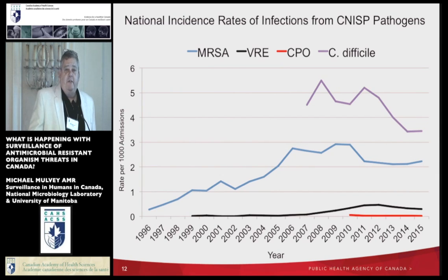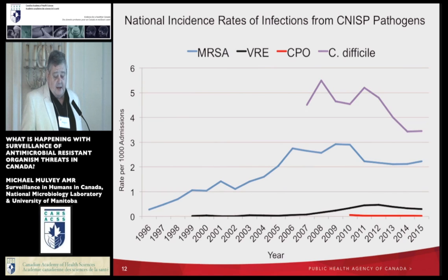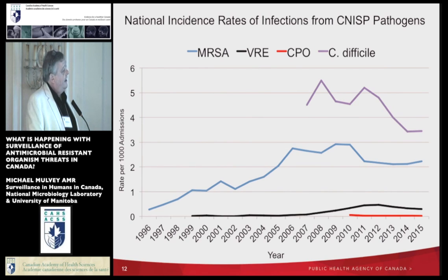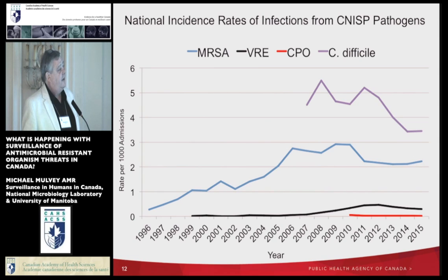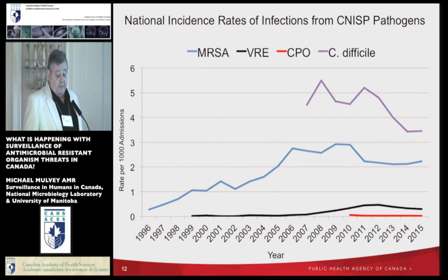This is a summary of the surveillance that's gone on at the CNISP program over time. MRSA was brought on as the first organism, and we slowly built it up by adding organisms. Rates of MRSA steadily increased until about 2010-11, where they dropped and then leveled off. C. difficile is somewhat of a good story — rates are decreasing. VRE began to increase between about 2007 to 2012 and then leveled off. The red line shows carbapenemase-producing organisms — it's an emerging issue, but from the CNISP surveillance, rates are still very low at those hospital sites.